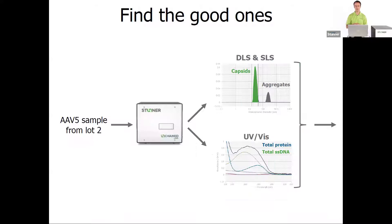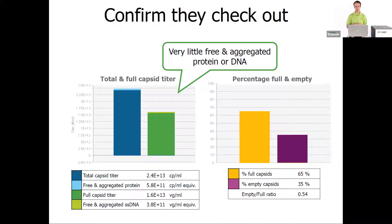Now let's look at a good AAV5 sample from a second lot, where aggregation is not a problem. We have a very strong green capsid peak, and UV-Vis doesn't detect that impurity anymore. Combining those pieces of information, this sample is in great shape — very little free or aggregated protein or DNA — and we get a very nice answer on capsid titer for total and full capsids, and we also understand the percent full and empty-full ratio.